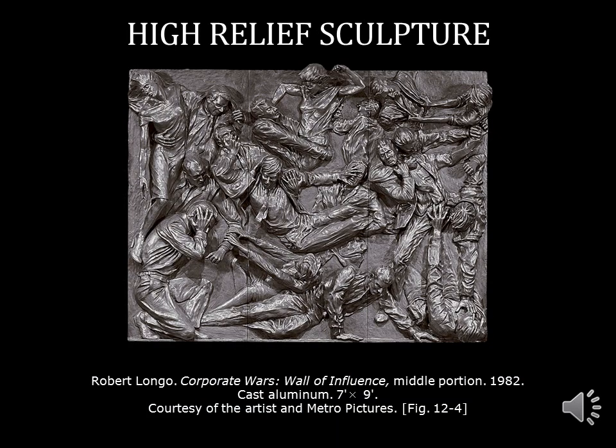In high relief sculpture, more than 50% of the modeled form projects from the surface. This is an example of a high relief sculpture from Robert Longo, titled Corporate Wars, Wall of Influence — the middle portion from 1982. If you notice, many of the limbs, the arms and hands, protrude much more from the surface than a low relief sculpture would. This allows you almost full access around them — you could reach underneath some of the arms and even insert your hands through them. You can see that even almost 30 years ago, there was quite a struggle depicted with accepting the corporate lifestyle.